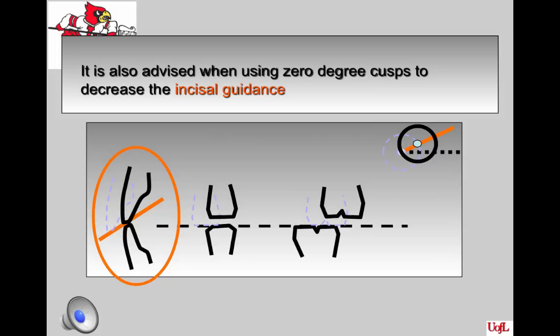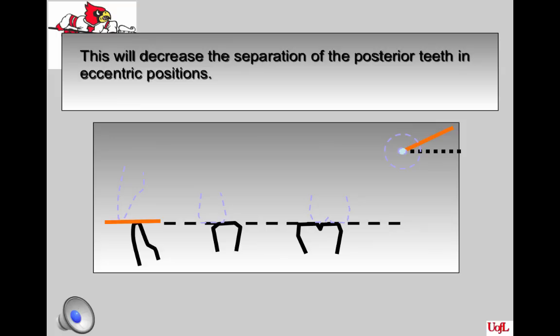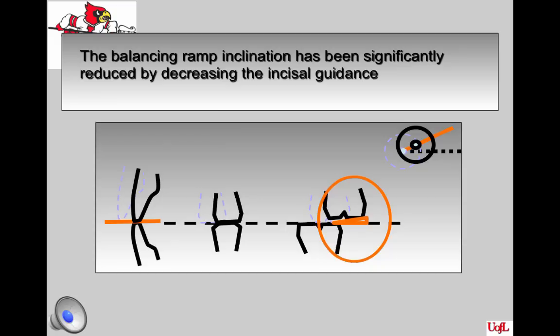When using zero-degree teeth, it is also recommended that you decrease the incisal guidance on the anterior. When you decrease the incisal guidance, there will be a decrease in the separation of the posterior teeth when the mandible goes into all the eccentric positions — working, non-working, and protrusive. You can see that when going to the end-to-end position, the zero-degree posteriors have less separation in eccentric movements than when the incisal guidance was steeper. By decreasing the incisal guidance, the balancing ramp inclination will be significantly reduced. This doesn't mean there will be no balancing ramp, since there may still be some posterior disclusion requiring one, but it will be significantly less.